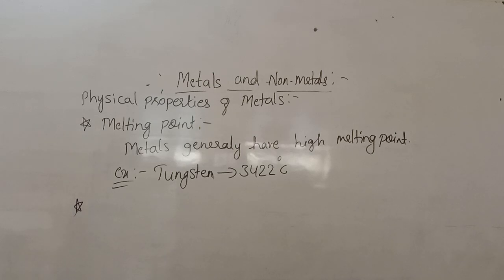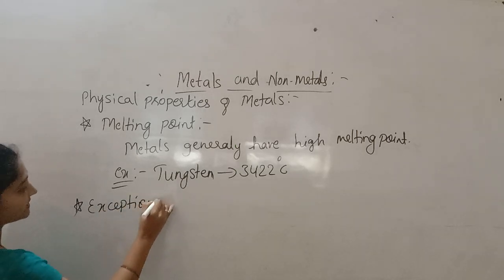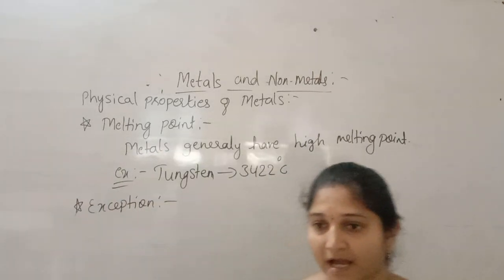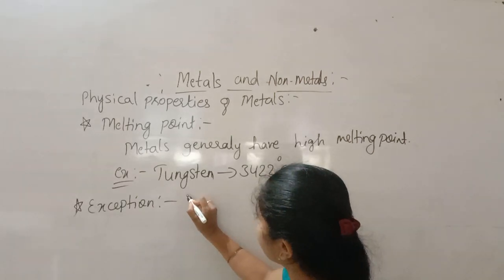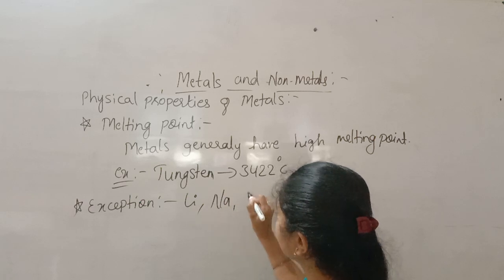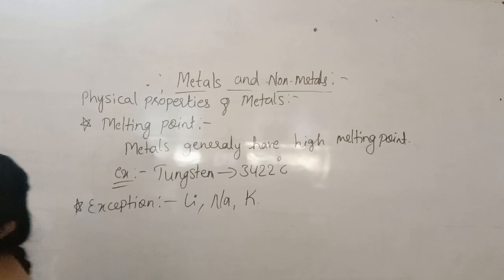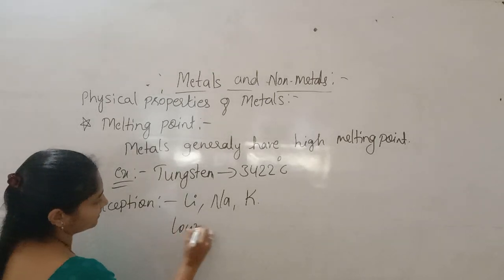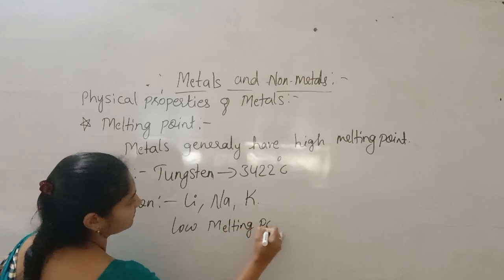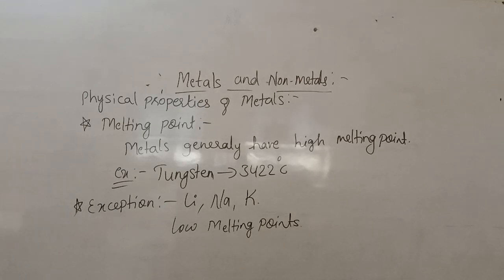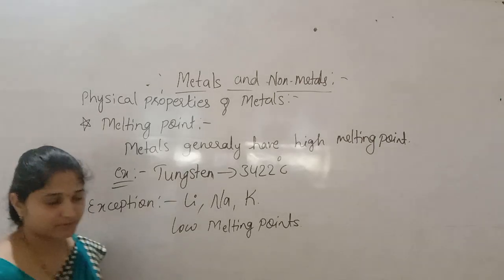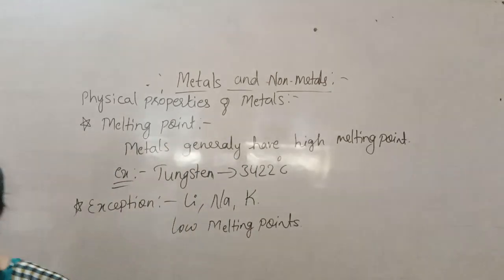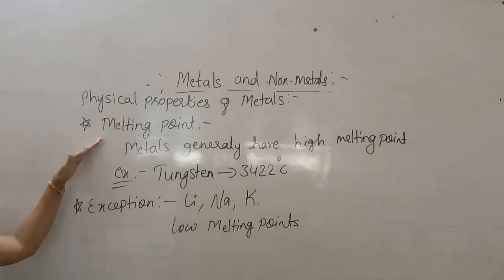But there are some exceptions — metals whose melting point is not high but low. Those exceptions are lithium, sodium, and potassium, which have low melting points. Even cesium and barium, which are usually used in radioactive compounds, also have low melting points.